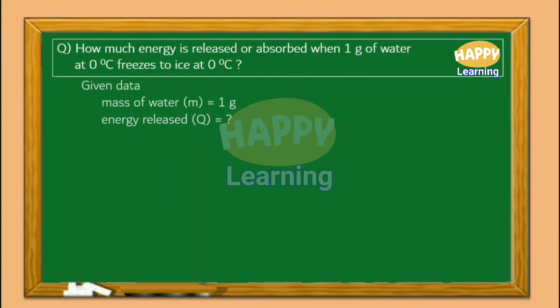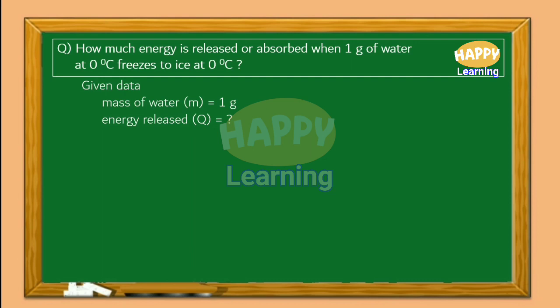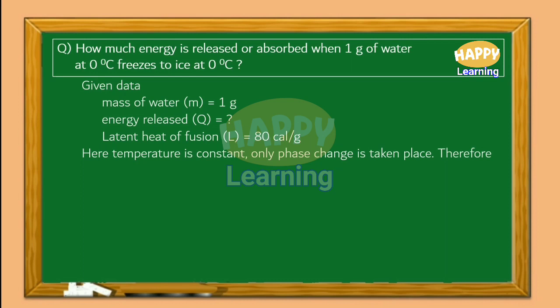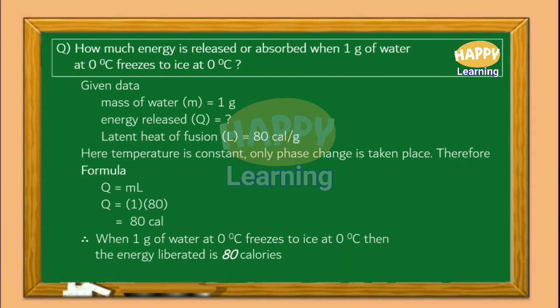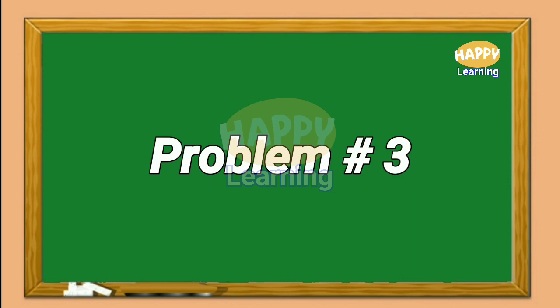Let us write the given data. Mass of water M equal to 1 gram. Energy released Q equal to question mark. As this is the fusion of water to ice, the latent heat of fusion L equal to 80 calories per gram. Temperature is constant, only phase change is taking place, so the formula is Q equal to M L. Substituting values: Q equal to 1 into 80, giving Q equal to 80 calories. Therefore, when 1 gram of water at 0 degrees Celsius freezes to ice at 0 degrees Celsius, the energy liberated is 80 calories.